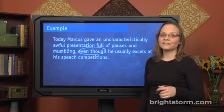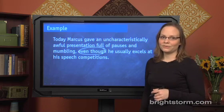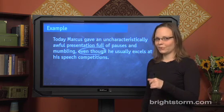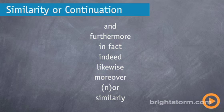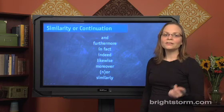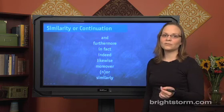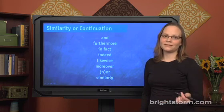There are many kinds of words that can be used for logical coordination, so let's explore the different categories. First of all, we have words that indicate similarity or continuation: 'and,' 'furthermore,' 'in fact,' 'indeed,' 'likewise,' 'moreover,' 'or,' 'nor,' and 'similarly.' If you see a word like that, you'd expect the two ideas to be related to each other — to be in the same vein.